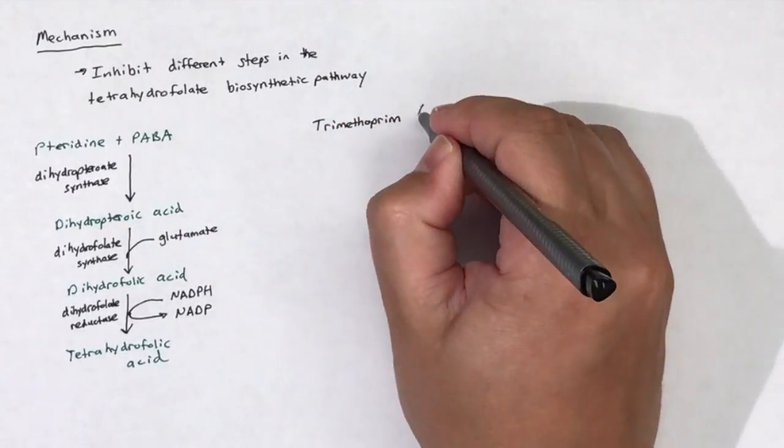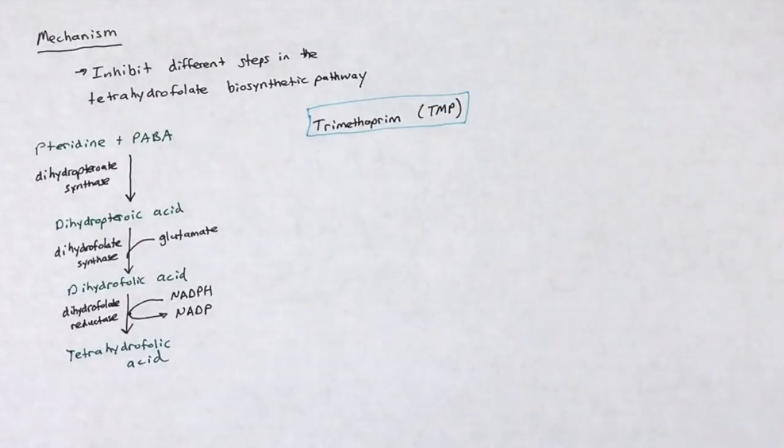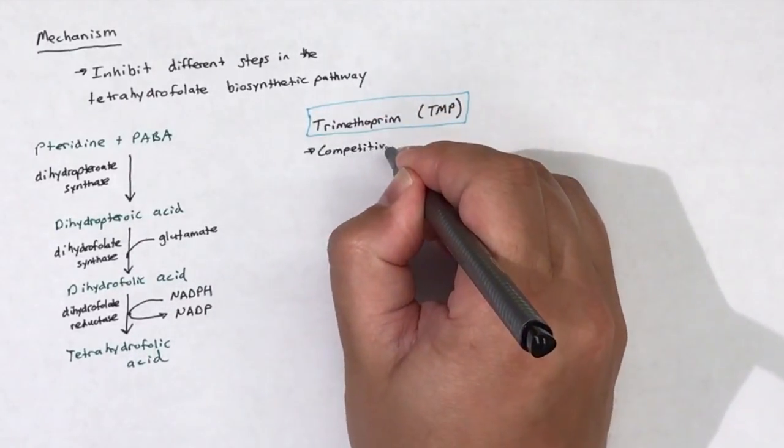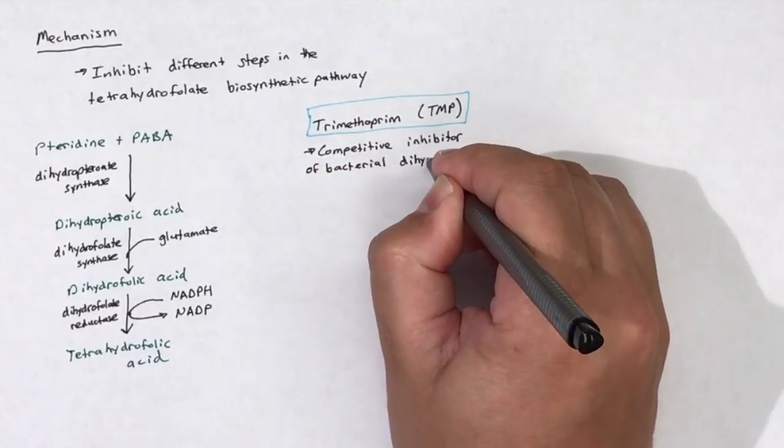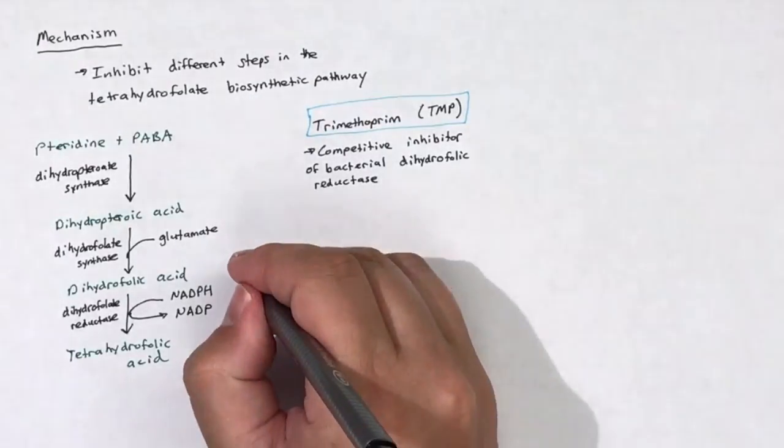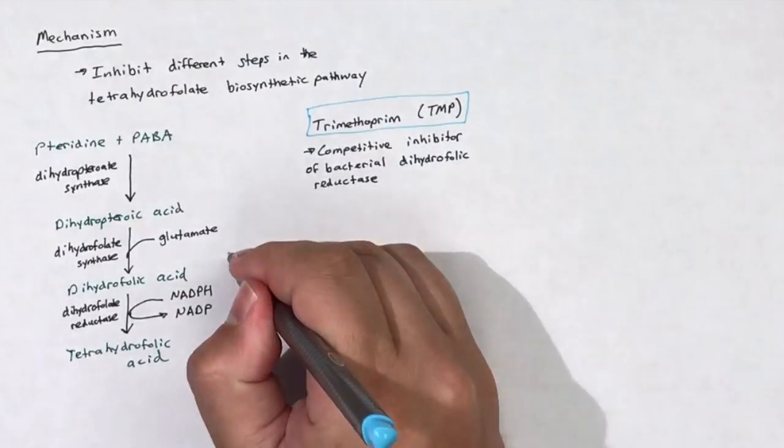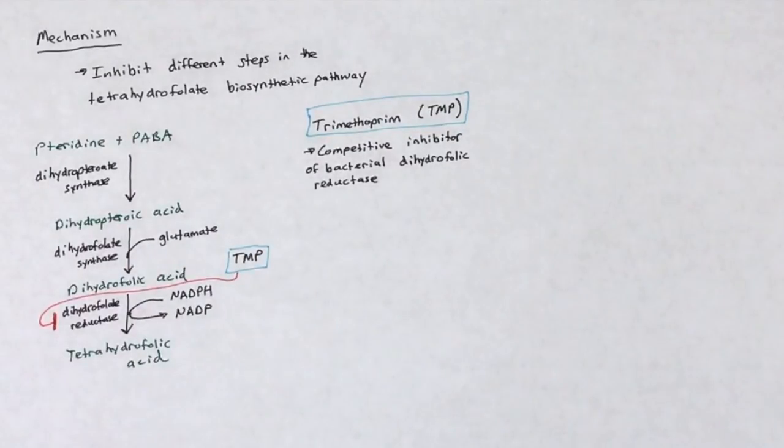Trimethoprim acts as a potent and selective competitive inhibitor of bacterial dihydrofolic reductase. Bacterial dihydrofolic reductase converts dihydrofolic acid to tetrahydrofolic acid, which is an essential step in the biosynthesis of tetrahydrofolate, purines, and ultimately bacterial DNA. Trimethoprim is a poor inhibitor of mammalian dihydrofolic reductase.